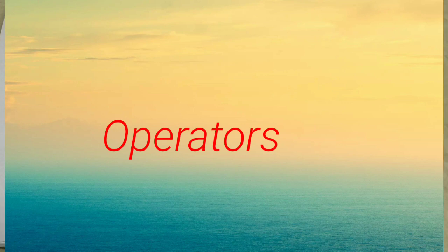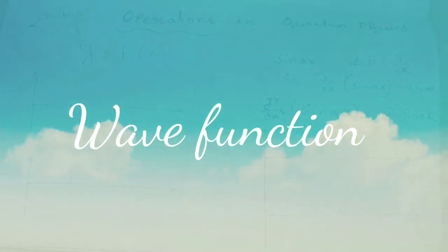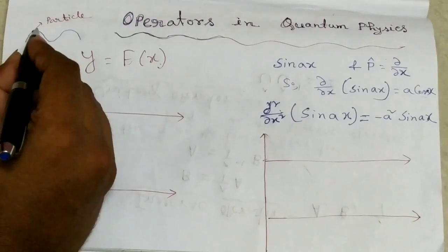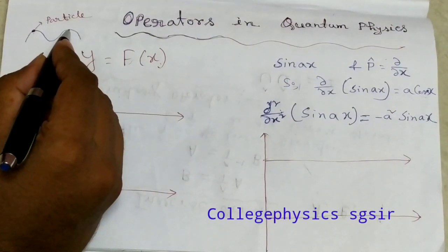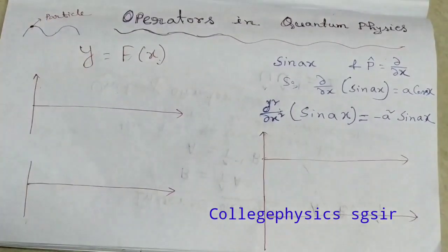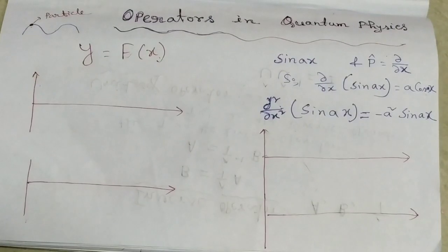In my previous lecture I discussed wave functions and some problems about expectation value calculation. I discussed that for each and every particle there is a wave associated with it, so we calculate position and momentum using the wave function.